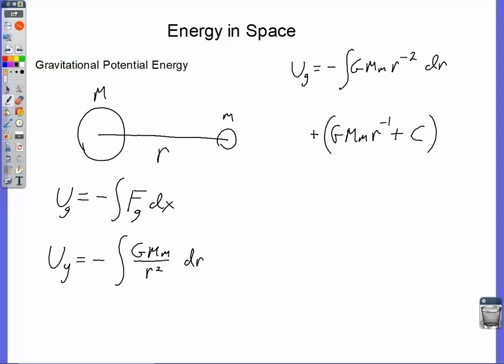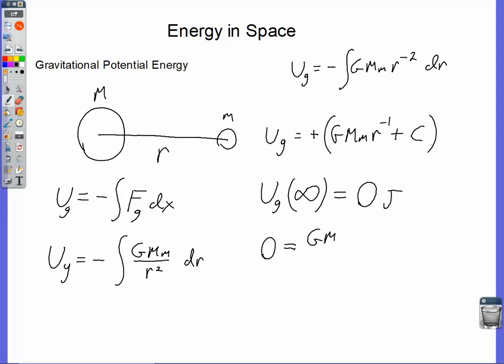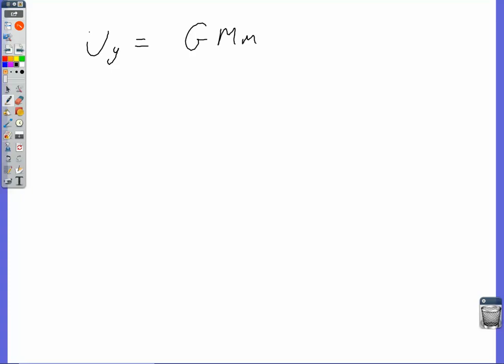So here's our gravitational potential energy function. We need to take care of that constant of integration. I am going to define my zero place for gravitational potential energy to be when these two masses are infinitely far apart. Because when they're infinitely far apart, there's no force of gravity between them, so we wouldn't expect any gravitational potential energy out there. Using that initial condition, I've got zero joules for my gravitational potential — that's equal to big G, M, m over infinity, because r equals infinity at this place, plus C. A finite term divided by infinity is zero, so we get zero for our C. So Ug equals big G, M, m over r.